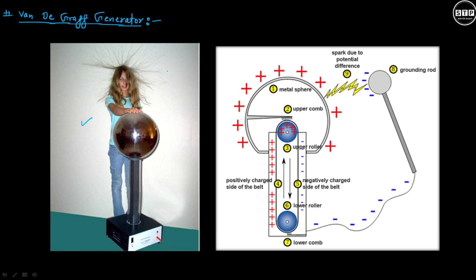So let's understand what this Van de Graaff generator is. Here there are two rollers connected via a belt, and this belt is connected to some source of current. Due to this, there is a transfer of charge on this belt.